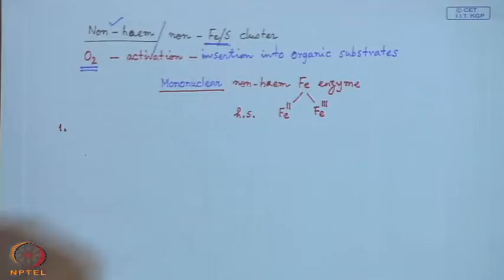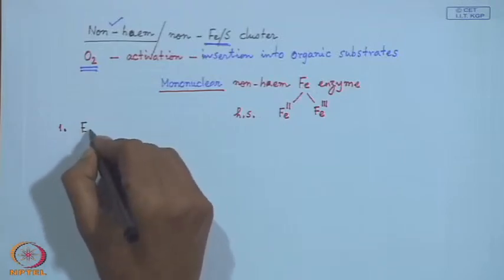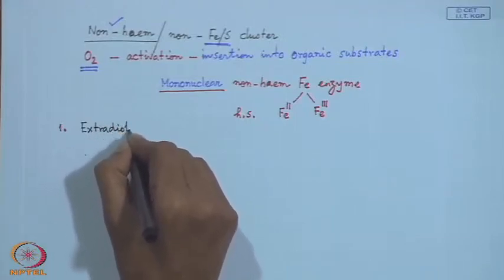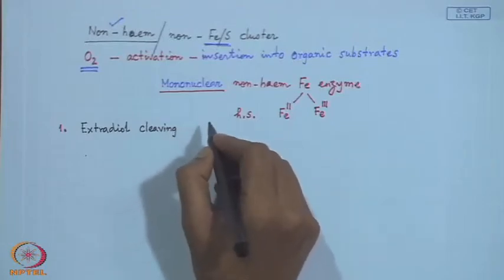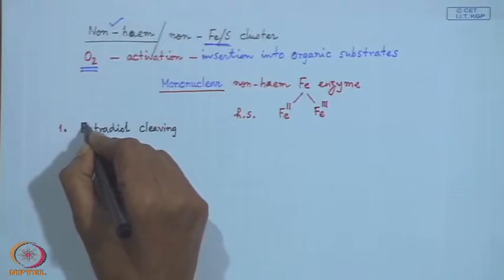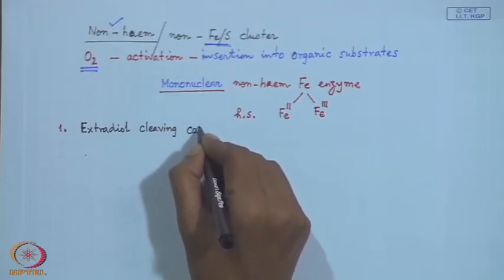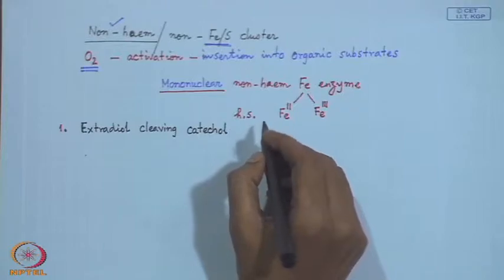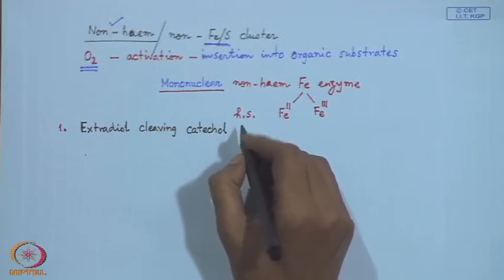There are several groups of reactions catalyzed by this system. One such, based on its typical definition, is extradiol-cleaving catechol dioxygenase. Extradiol means we are talking about cleaving a diol system — one such diol we all know is catechol. The reaction is the extradiol-cleaving catechol dioxygenase reaction.